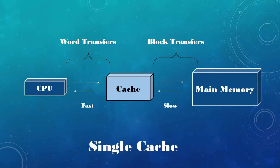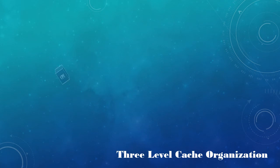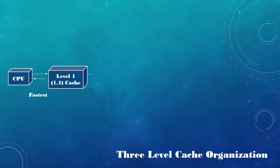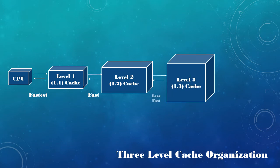This is single cache. This is 3-level organization. CPU to level 1 cache is fastest. Level 2 cache is fast. Level 3 cache is less fast. And if in main memory it is slow.